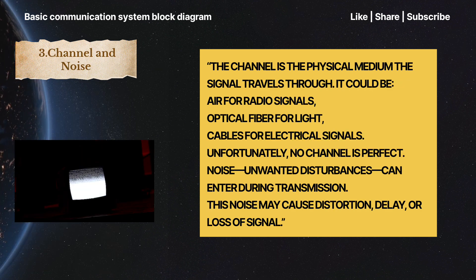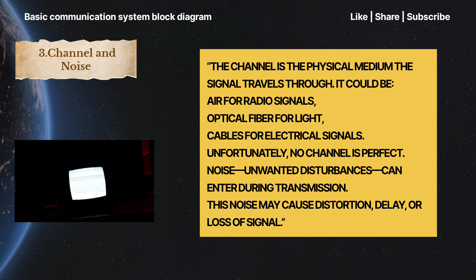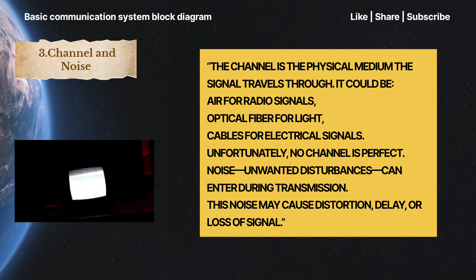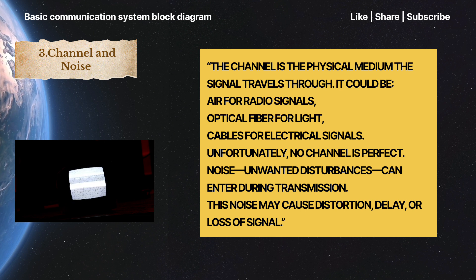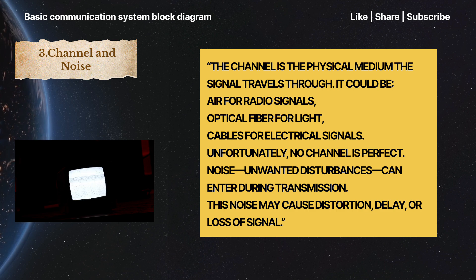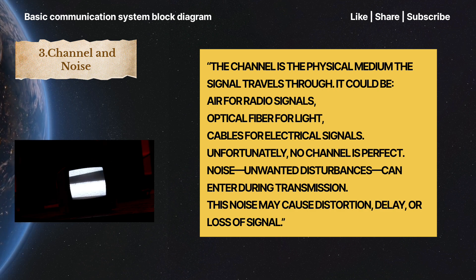The channel is a physical medium through which the signal travels. It could be air for radio signals, optical fiber for light, or cables for electrical signals. Unfortunately, no channel is perfect. Noise – unwanted disturbances – can enter during transmission, causing distortion, delay, or loss of signal.